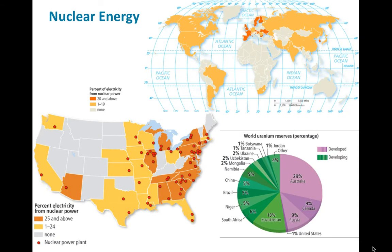Here's nuclear energy worldwide — Europe is kind of the leader, and South Korea falls in there as well. A lot of the parts of the world using it tend to be more developed. You can see the nuclear power plants in the United States and where they sit. You need uranium or plutonium to create the fission energy for nuclear power, and a lot of those uranium reserves are in the developing regions — South America, Africa, and Central Asia.